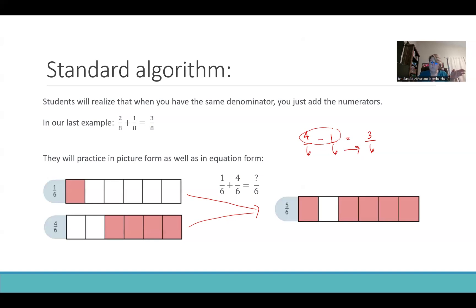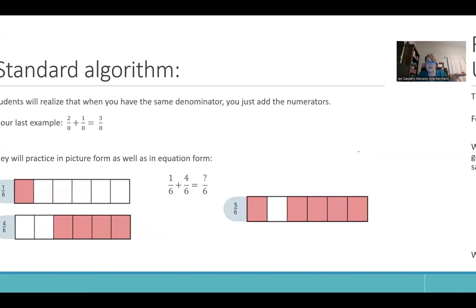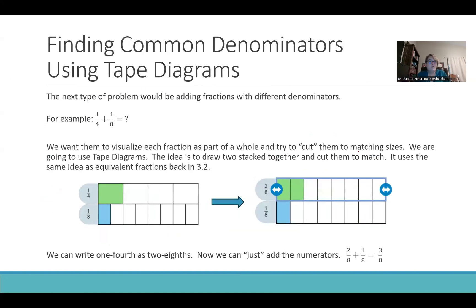This is fourth grade. What we want to talk about today is what happens if the denominators are different. Because they're going to get used to same denominators being easy, and then we're going to throw them a curveball and say, what's one-fourth plus one-eighth? There are two methods we're going to use. This video is going to talk about tape diagrams and the next video will talk about area models. There are benefits to both methods, so that's why I want to share both.